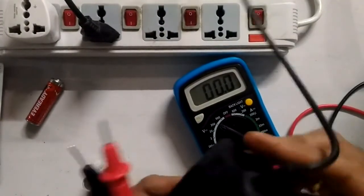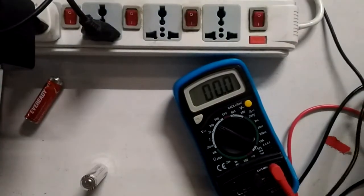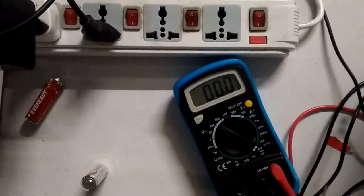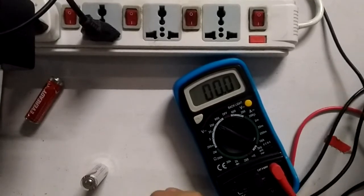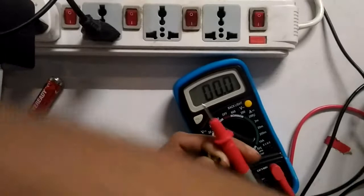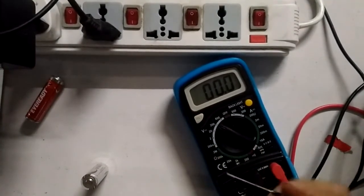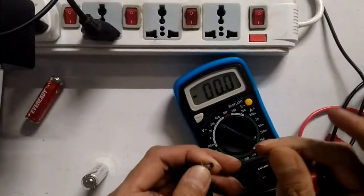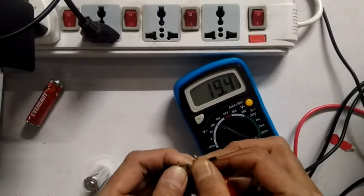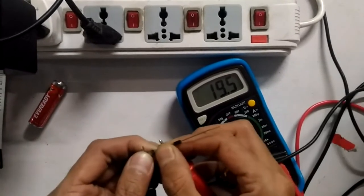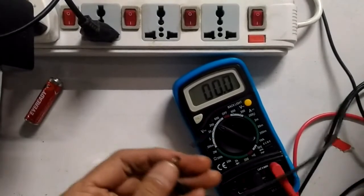This is a power adapter for my laptop, and usually the outer is negative and inner is positive. It seems the probe is not reaching inside. The outer is negative. So this is 19.5 volts.